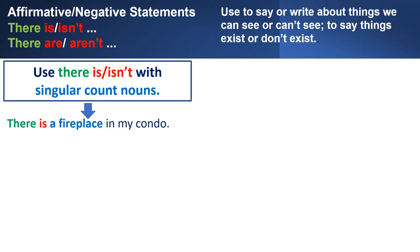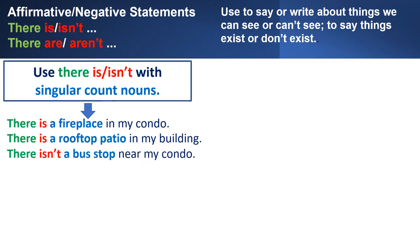There is a fireplace in my condo. There is a rooftop patio in my building. There isn't a bus stop near my condo. There isn't an indoor swimming pool. Fireplace, rooftop patio, bus stop, indoor swimming pool — each is a singular count noun, so we say there is or there isn't.